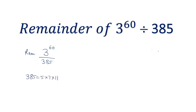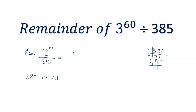Let us see how we can write this. This number can be divided by 5, 7, and 11. So we can also say that we have to find the remainder when 3 power 60 is divided by 5 into 7 into 11.